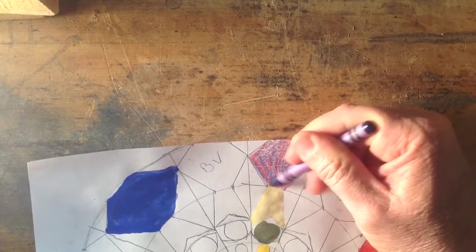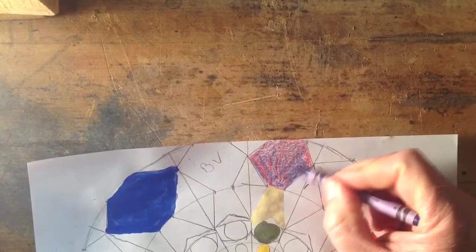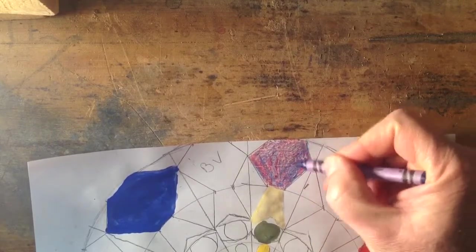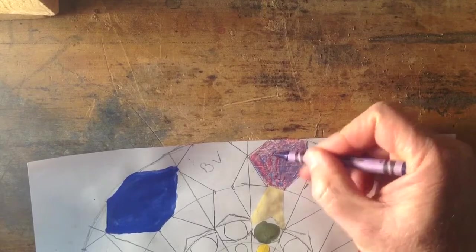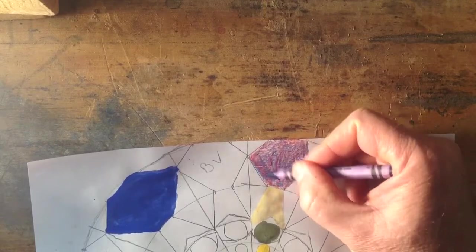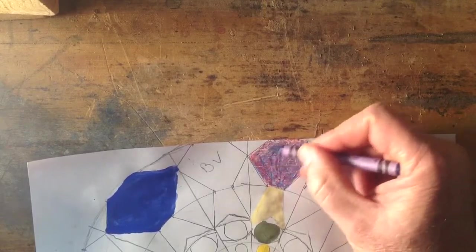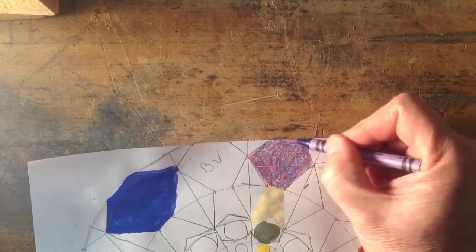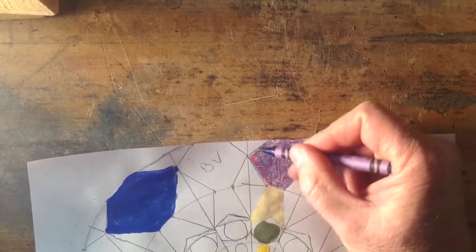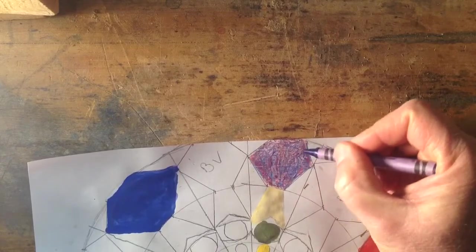These are crayons, just normal Crayola type crayons, and I would say that this is semi-successful. It doesn't give you a super nice violet, but you can tell that it's not red and it's not blue.